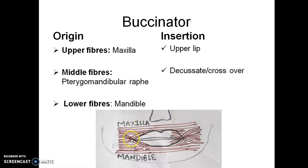It is the middle fibers which is important, which will cross over to the opposite lip at the modiolus. Modiolus is like a circle. It has a fibromuscular node in which these muscle fibers will cross one another. It will decussate or cross over near the modiolus or the angle of the mouth. Lower fibers go to the lower lip.